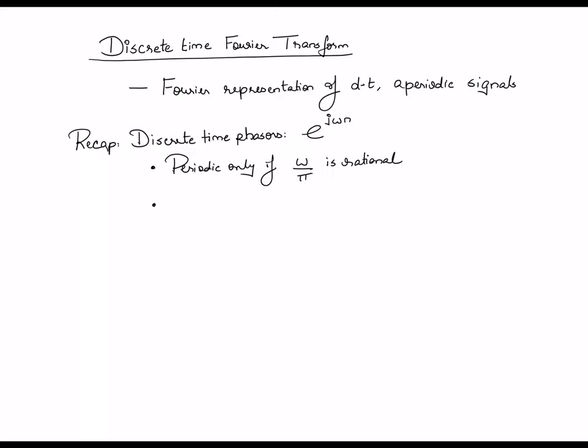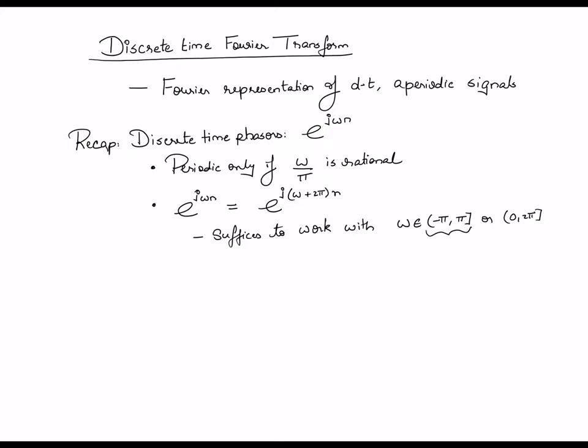The other property is that discrete time phasors have the property that if ω is translated by any multiple of 2π, the phasor remains exactly the same. In other words, e raised to j·ω·n is exactly the same phasor as e raised to j·(ω + 2π)·n. This means that in discrete time it is effectively sufficient to work in a range of frequencies that spans a length of 2π on the real line — so ω between −π and π, or equivalently 0 to 2π.